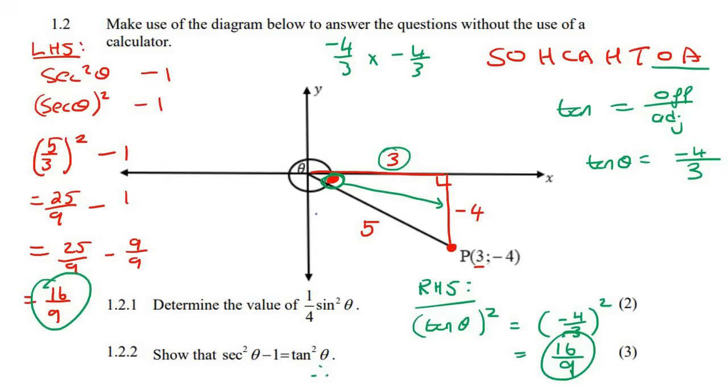And so what we can see is that this side and this side is the same. And so we can just say, therefore, sec squared theta minus 1 is the same as tan squared theta.